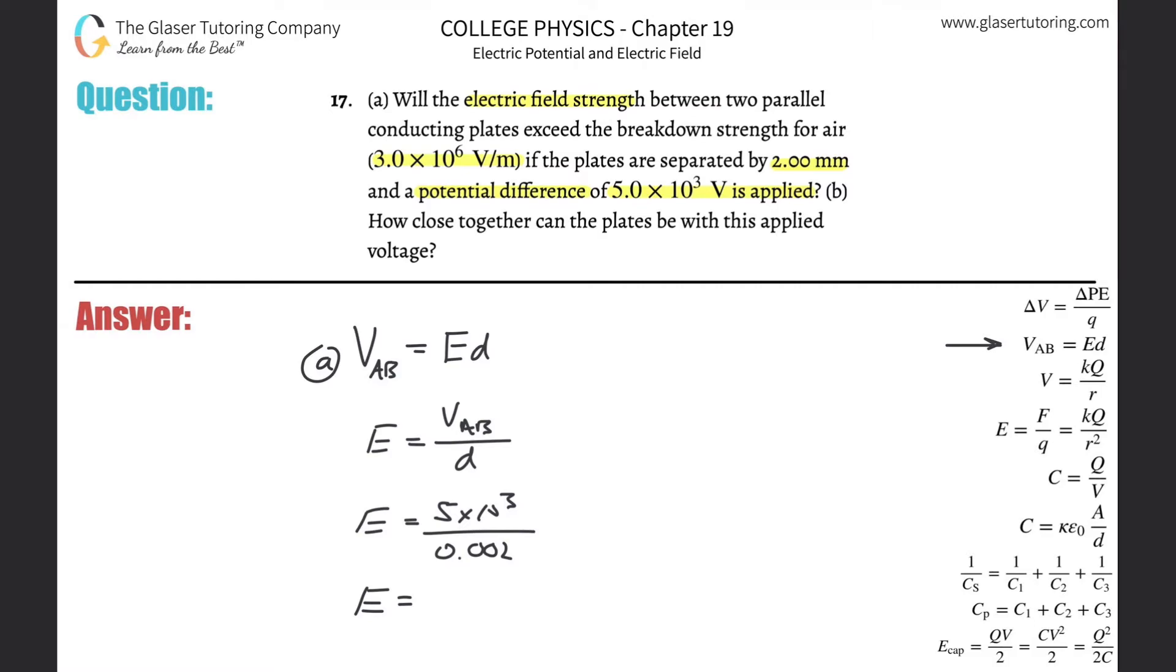So we're simply going to now get 5 times 10 to the 3 divided by 0.002, and it works out to be 2.5 times 10 to the 6, and that's in volts per meter.